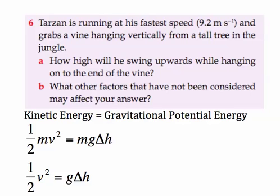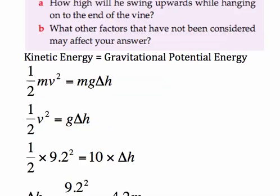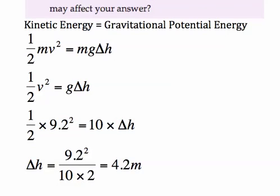So what I've done is make them equal to each other and his velocity we know is 9.2 from the question. Acceleration due to gravity we'll take as 10 and we're going to solve to find the change in height. So transposing that equation we see that his change in height is 4.2 meters.